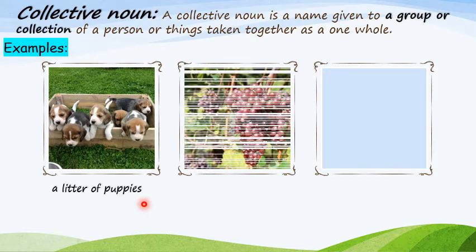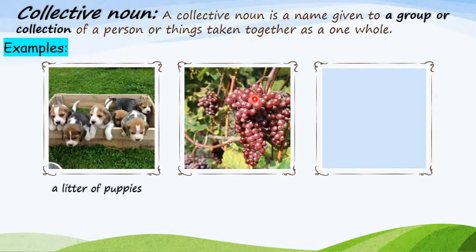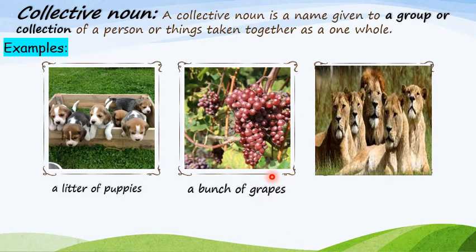Let's take another example. Grapes — a lot of grapes in one bunch. So what do we call it? A bunch of grapes. One more example. What can you see here in this picture? Lions — a group of lions. Yes. So what do we call it? A pride of lions.